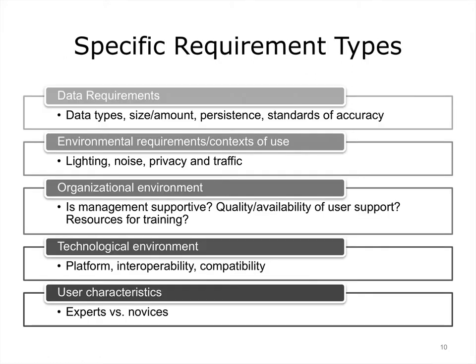There is a range of specific requirement types, and some are more applicable in particular settings than others. For example, environmental factors such as noise would be especially important if users had to listen for warning signals or process completion, but less central in contexts with greater tolerance of noise. Understanding user characteristics is a subject that has not received sufficient attention. There is a great deal of variation in user types and skill levels, and understanding that variation could go a long way to meeting user needs.